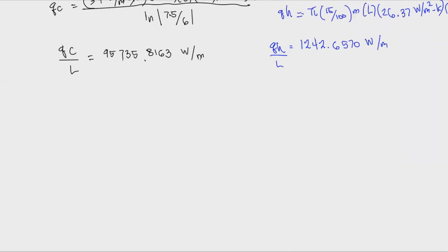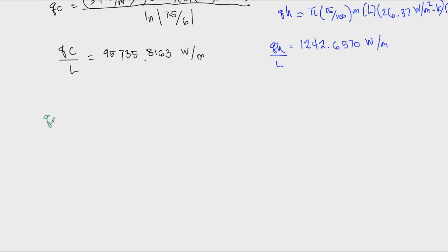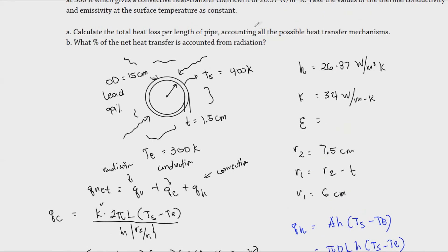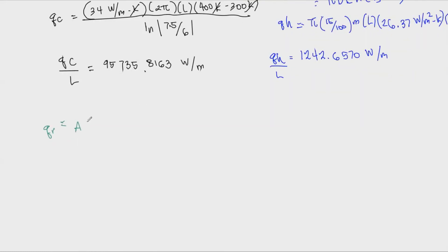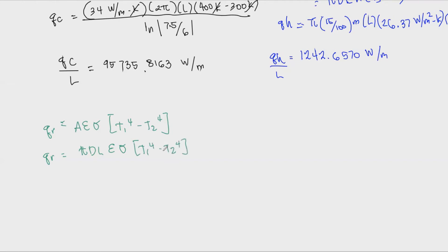Finally, we find Q_r, the heat lost through radiation. Since we have a single emissivity, the equation is: Q_r = ε × A × σ × (T1⁴ - T2⁴), where σ is the Stefan-Boltzmann constant. We need the area using the outside diameter, the emissivity, and the temperatures raised to the fourth power.